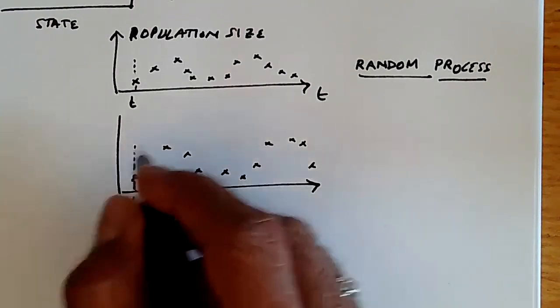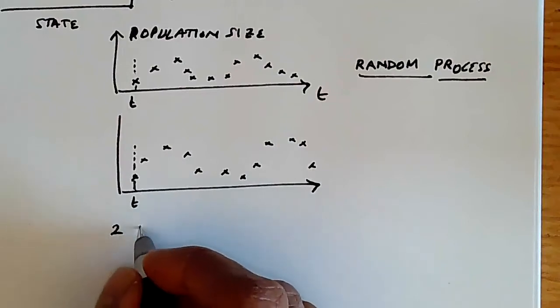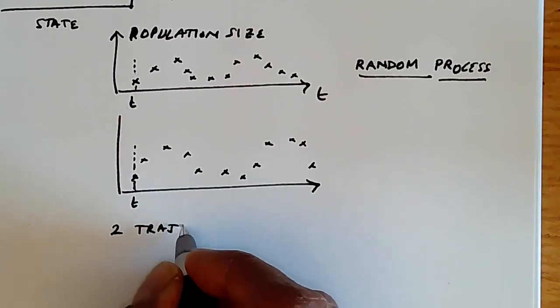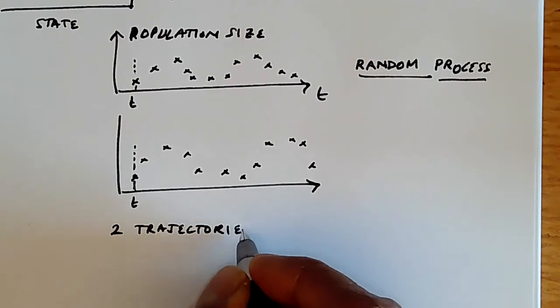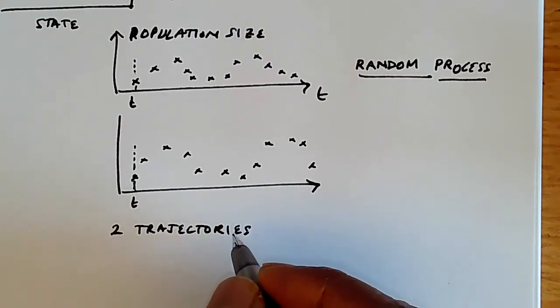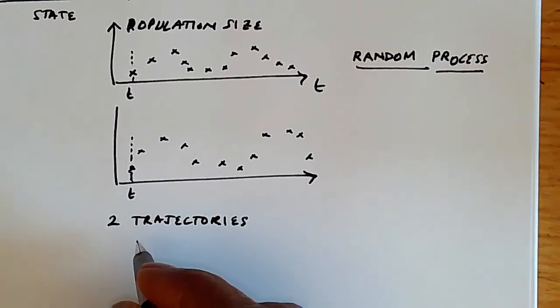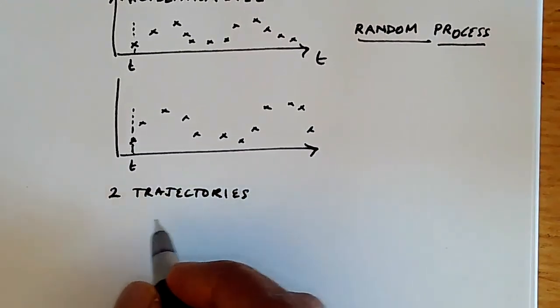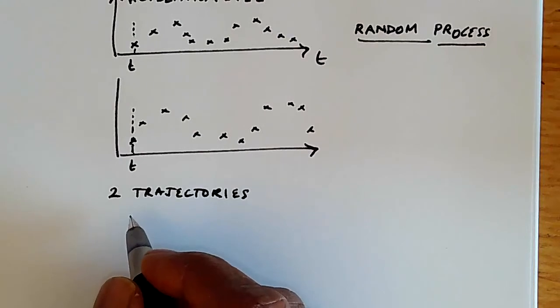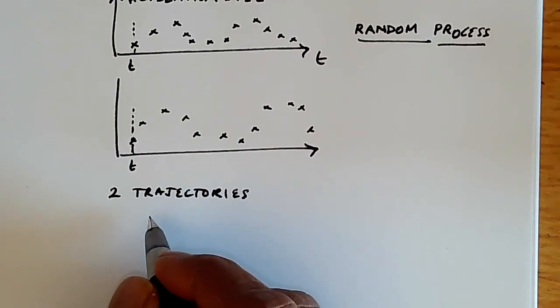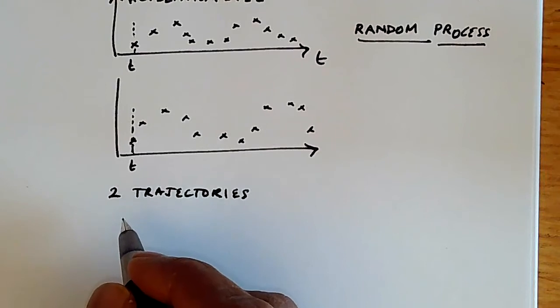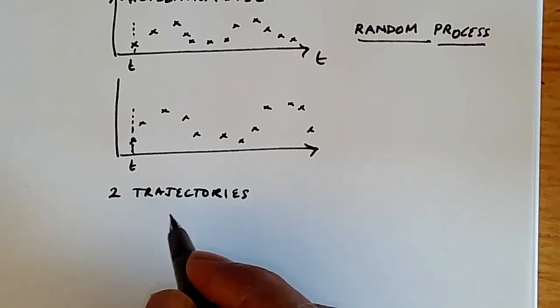In some sense, what we have over here are two trajectories of the same stochastic process. And so, in the course of simulation, what we're trying to do is to create a set of trajectories such that any kind of statistic we compute on these trajectories are going to be giving us some information about the underlying stochastic process.